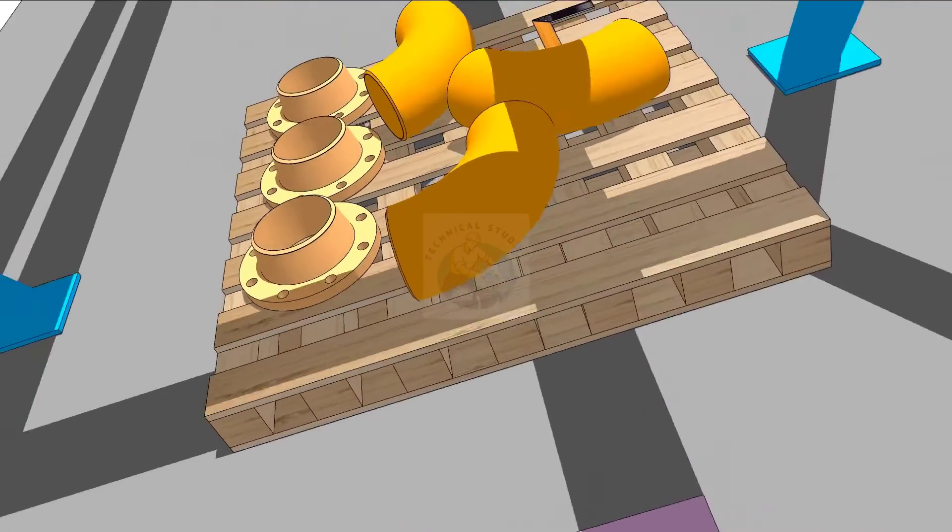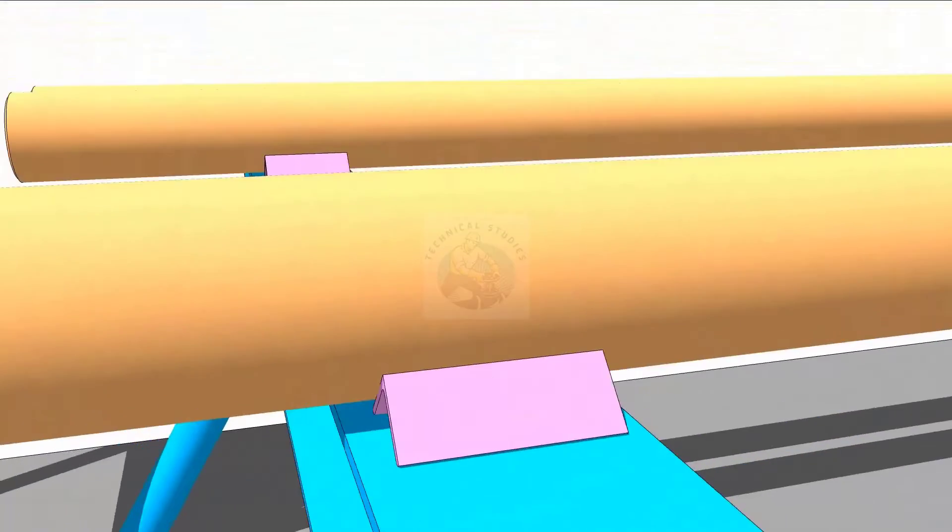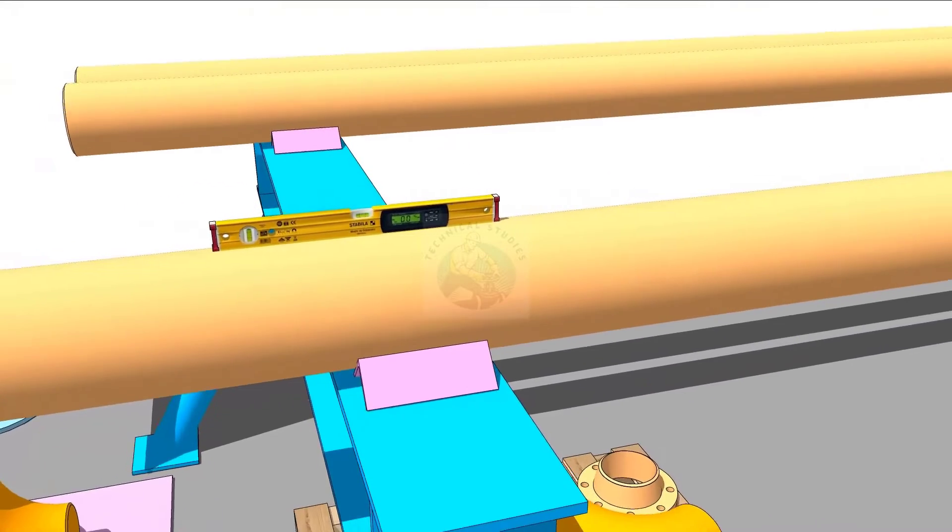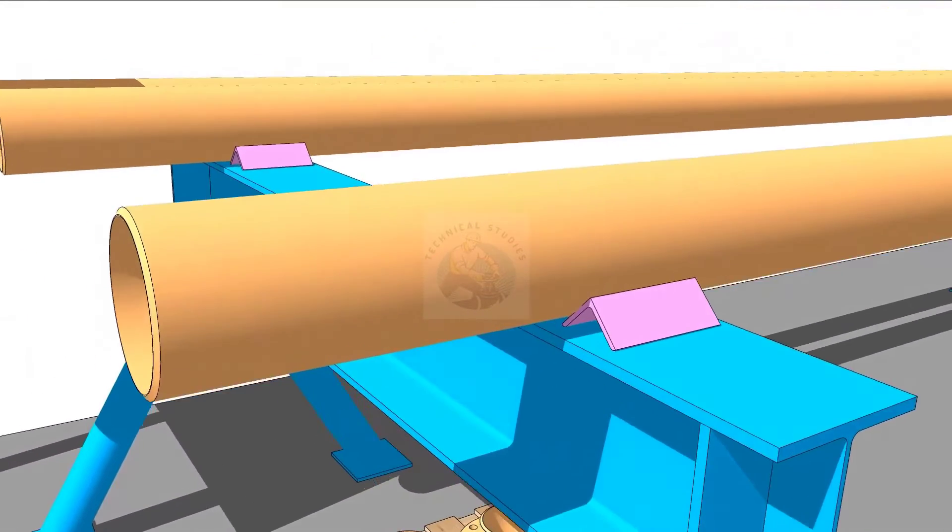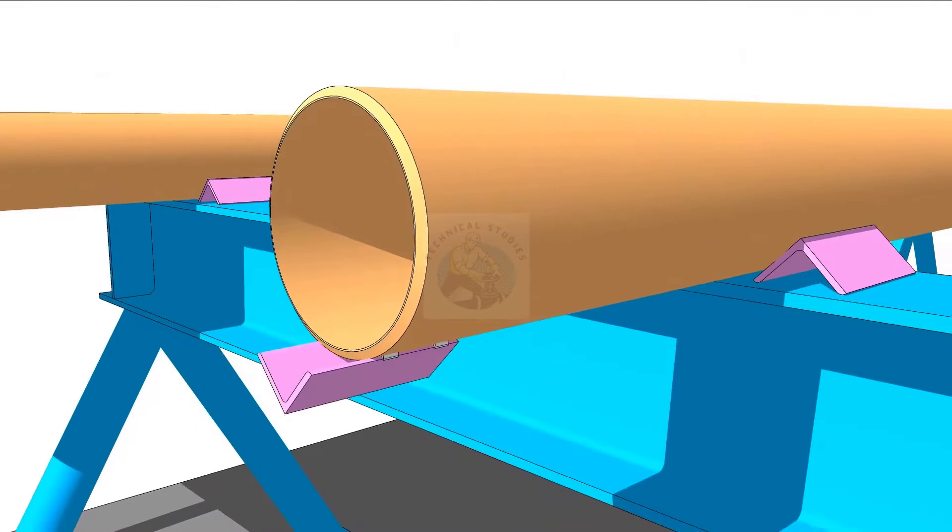Clean both ends of the elbow and maintain squareness. Level the pipe and provide proper supports. Tack weld one piece of angle or channel piece below the pipe as shown.